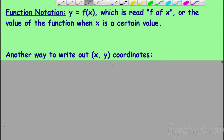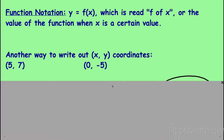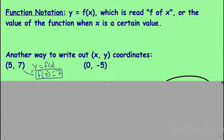We have two coordinate points in x and y, and we want to write them in terms of function notation. Since y = f(x), instead of x I put my x value. So f(5) — the value of this function when I plug in 5 — is 7, so f(5) = 7. That's the same as the point (5, 7). For the next point: x is 0, I plug it in, and the output is -5, so f(0) = -5. It's just a new way to write things.